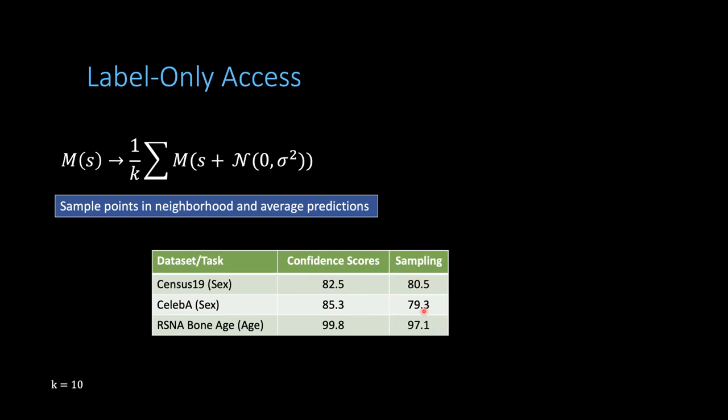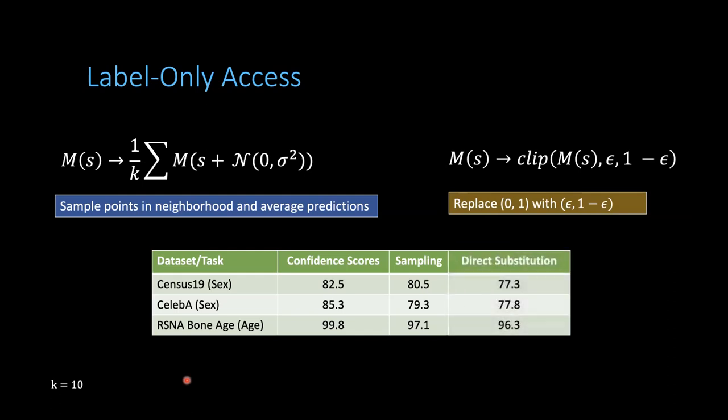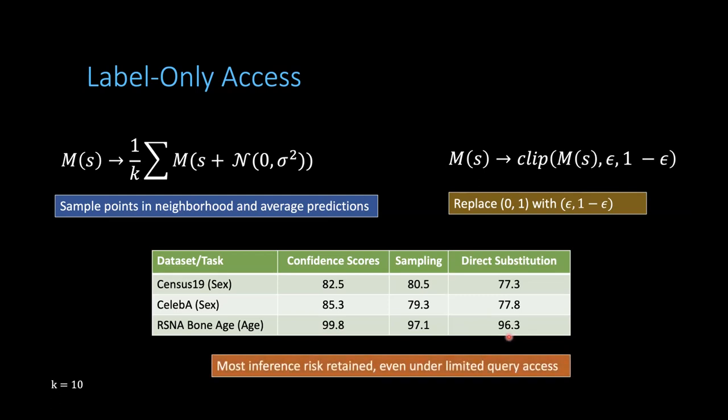But at the same time, you're also querying multiple times to the victim's model, because it's based on neighborhood sampling. Instead of the one query you would have used for the attack in the normal setting, you end up querying 10 times, which is a 10x increase. We also tried looking at a more simple approach, which is just replacing the 0 and 1 values with something like epsilon and 1 minus epsilon, and just plugging it in the KL attack directly. And surprisingly, it retains a big chunk of its inference risk. The inference accuracies, in the worst case, drop only from 99 to, let's say, 96%. This is interesting, because as an adversary, even if you don't have access to the confidence scores, you can do something as trivial as just replacing the 0 and 1 values and still get very high inference risk.